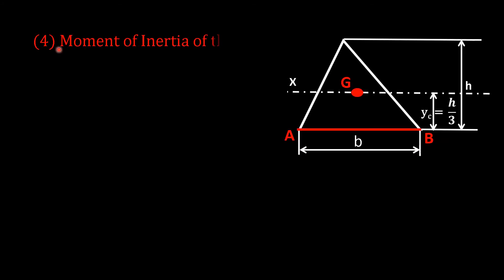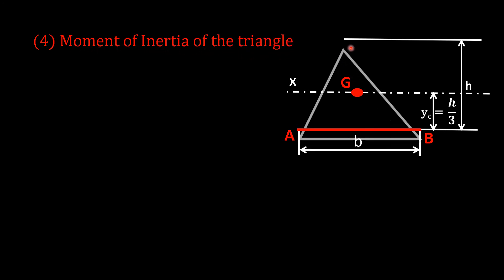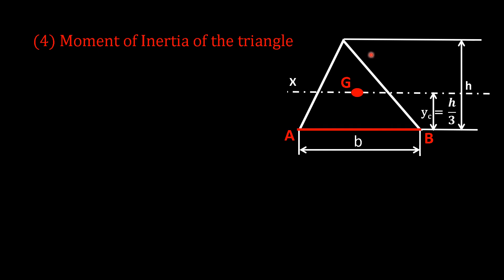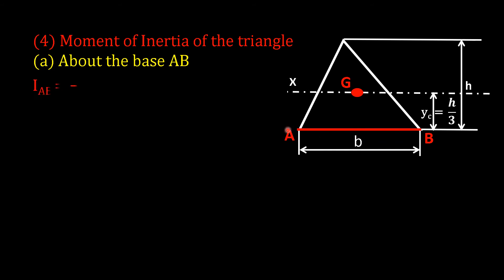Number four: moment of inertia of a triangle about its base AB. We know that I_AB = bh³/12, which we have already derived. We can also find the moment of inertia of the triangle about the centroidal axis XX, which is parallel to the base AB and passes through centroid G.